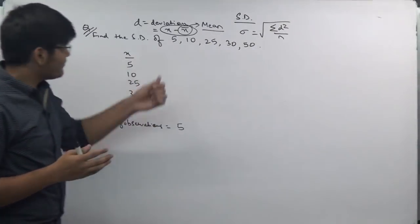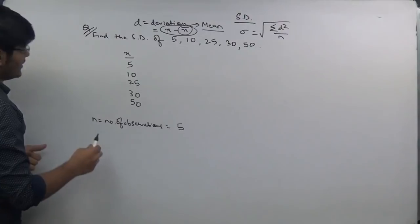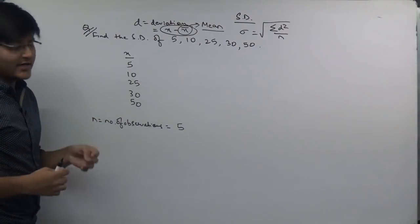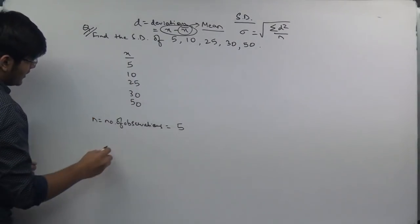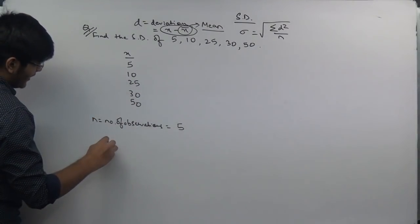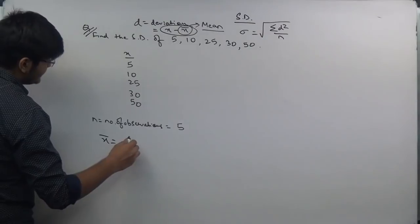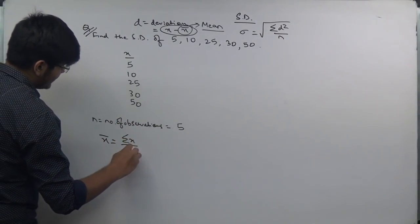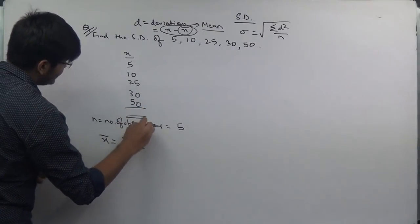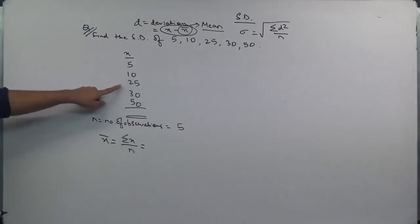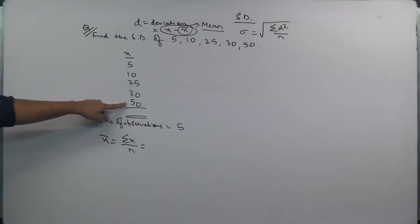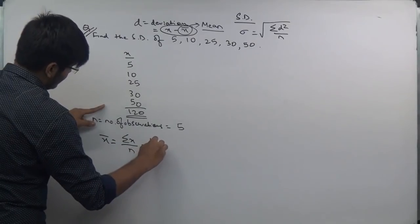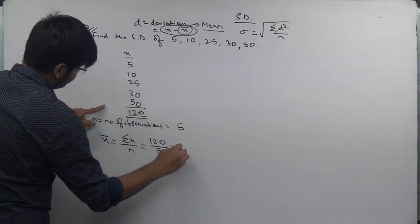First we find the mean. For individual series, x̄ = Σx / n. The sum is 5 + 10 + 25 + 30 + 50 = 120. Dividing 120 by 5 gives us x̄ = 24. This is the arithmetic mean we need.